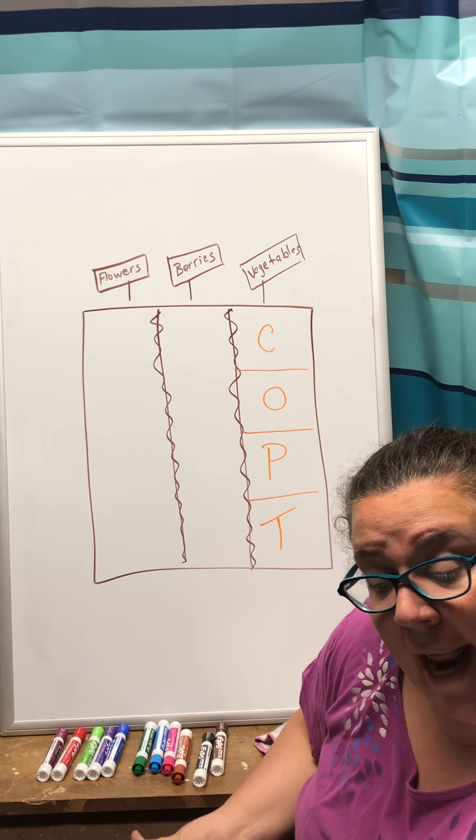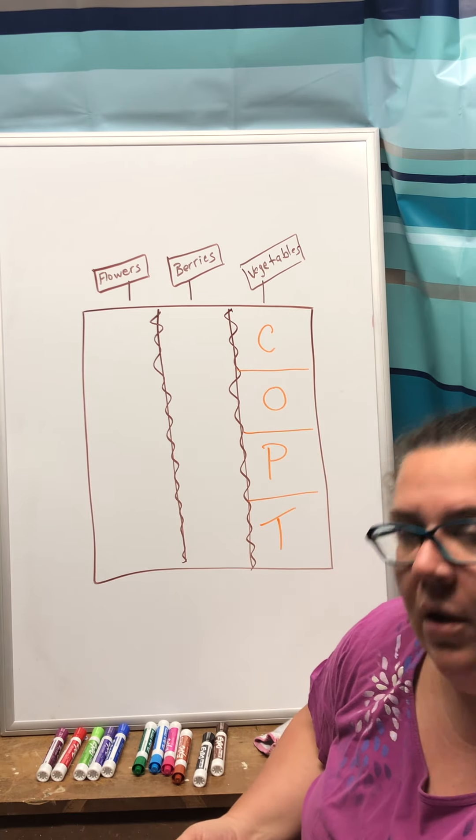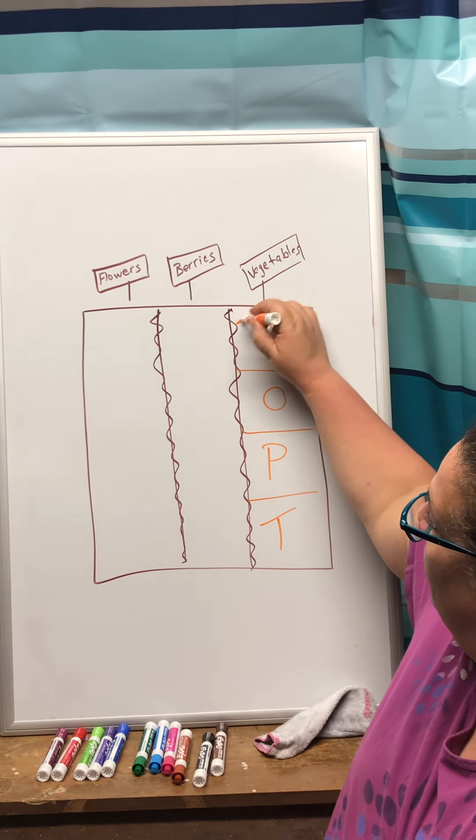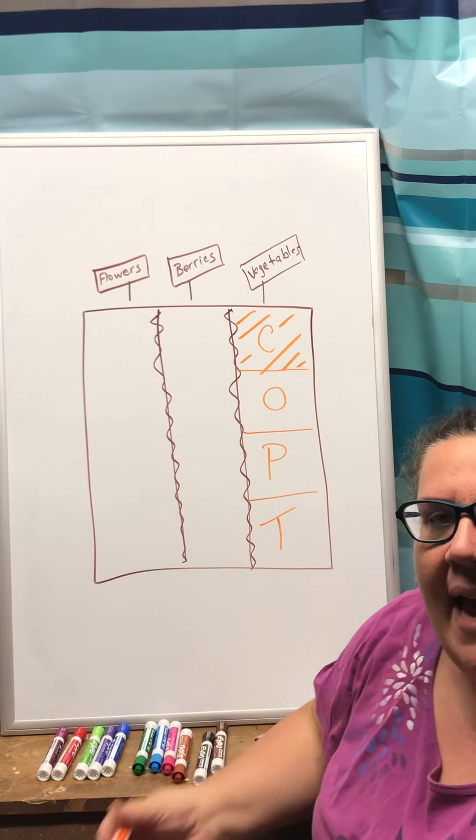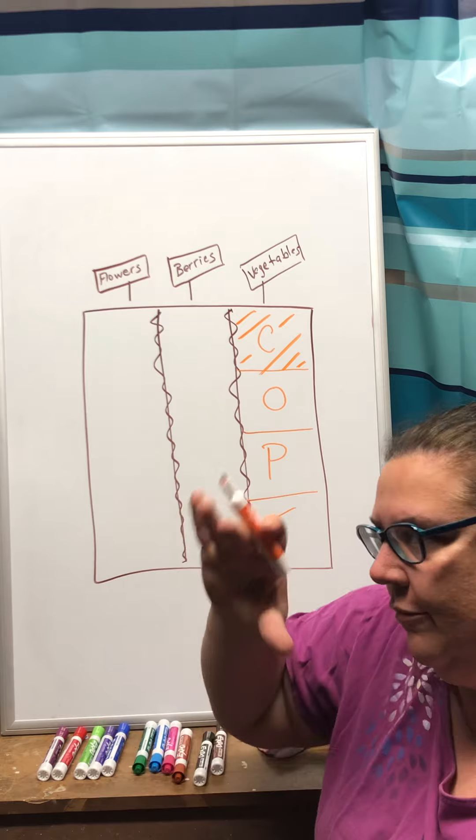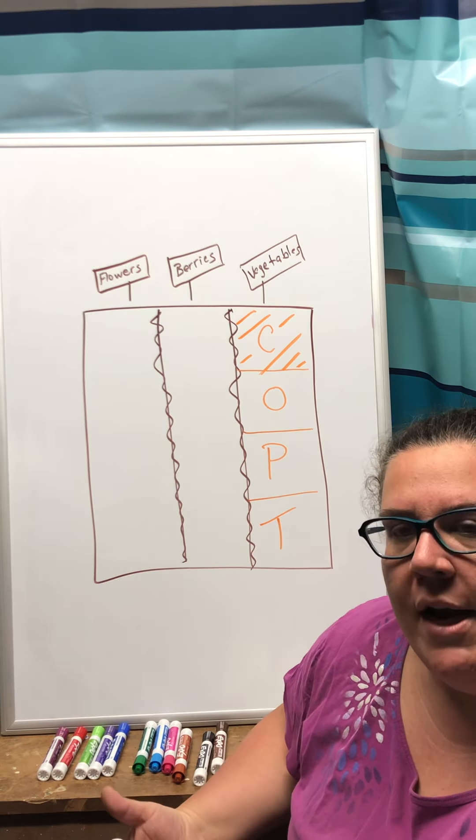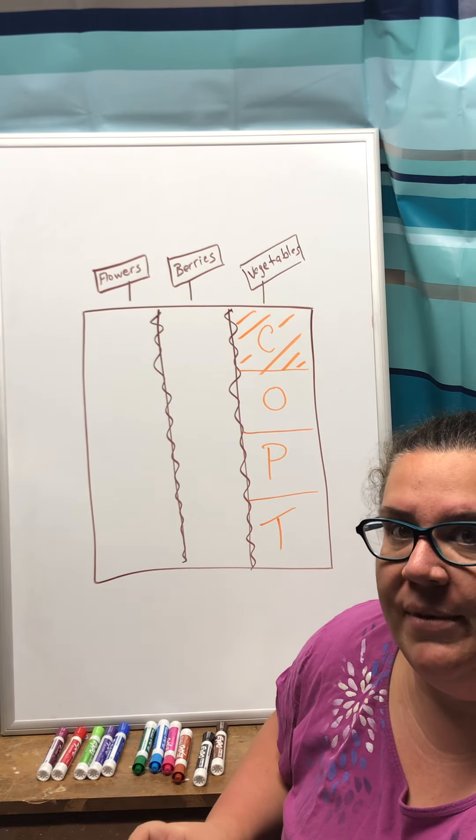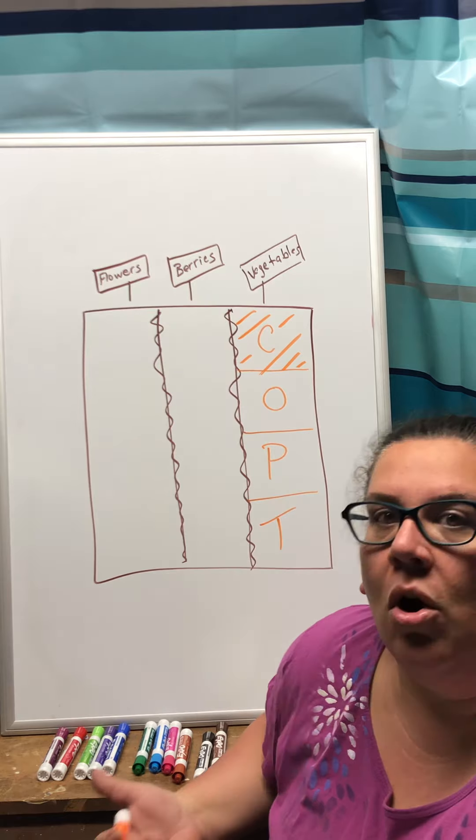And their question now is what fraction of the garden is planted with carrots? So we're only looking at this section and we want to find out what that little rectangular or square piece is of the garden. Now the wording of the problem is very important so I'm going to read that question again. It says what fraction of the garden?